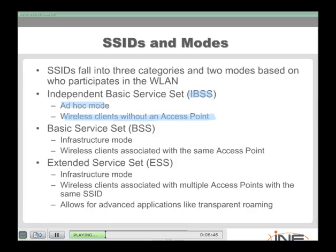With the basic service set approach — also called wireless infrastructure mode — we have an access point acting as a traffic cop. Another capability is the extended service set, where multiple access points service the same SSID. This is nice because it gives individuals wireless coverage over a larger distance in a transparent and seamless way. They can move from AP to AP keeping the same SSID, which leads into roaming.